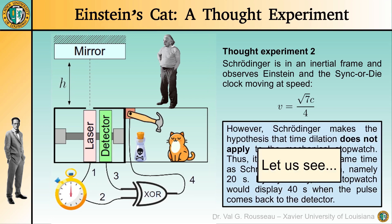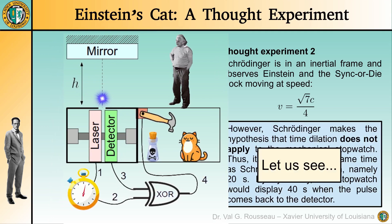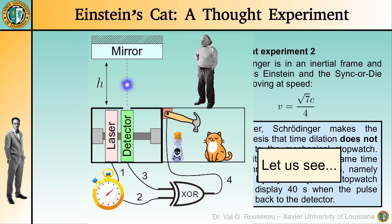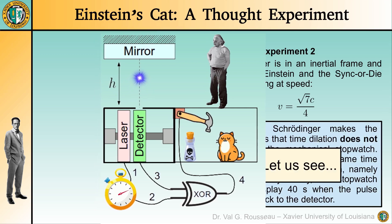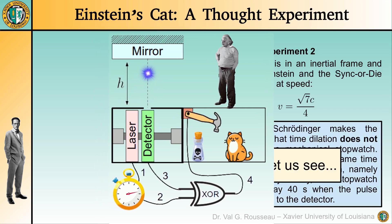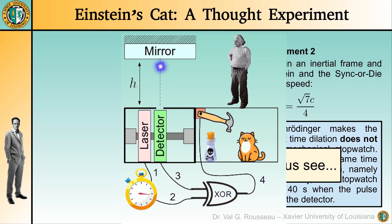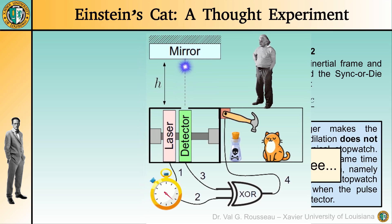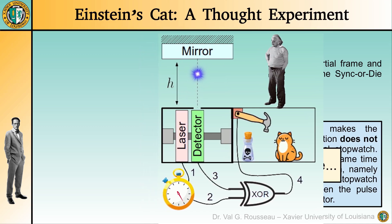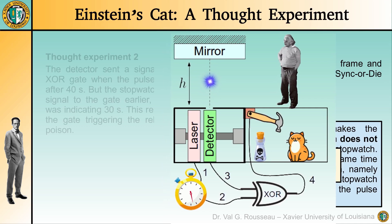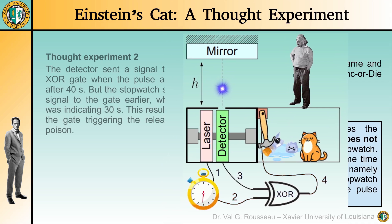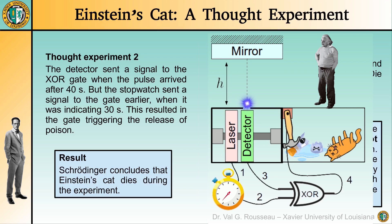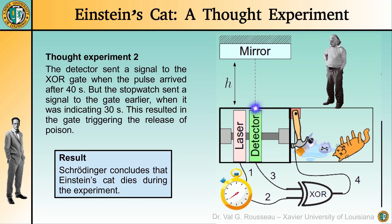So, Schrodinger sees Einstein starting the stopwatch and the laser emitting the light pulse. The light pulse reaches the mirror after 20 seconds, and at that moment the stopwatch supposedly indicates that same time. No problem so far. Then, the stopwatch is clearly going to indicate 30 seconds before the pulse comes back to the detector. So, the release of poison has been triggered. As a result, Schrodinger would conclude that the cat does not survive the experiment.